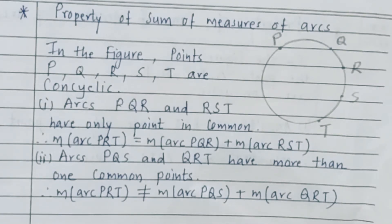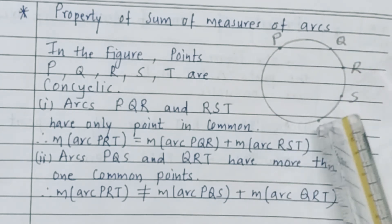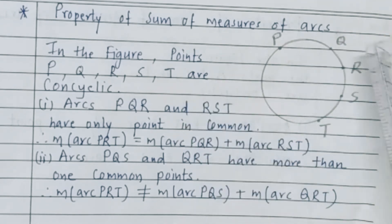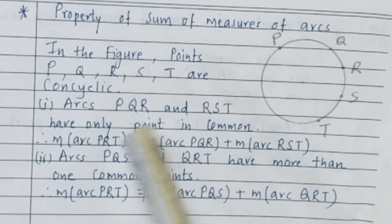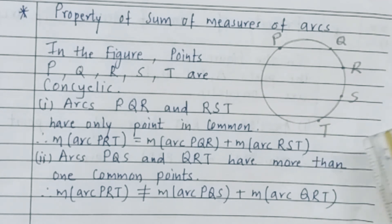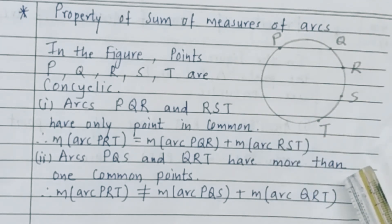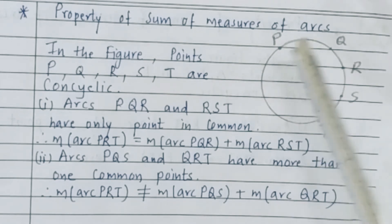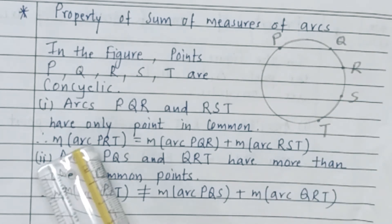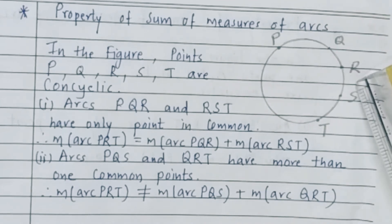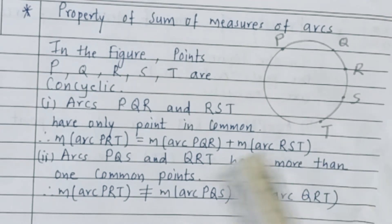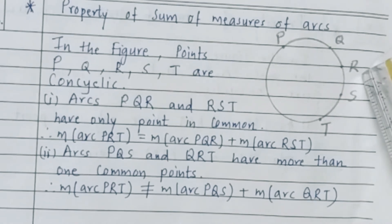Let us learn the property of sum of the measure of an arc. In the given figure, points P, Q, R, S, T are concyclic. When four or more points lie on the circle, they are called concyclic points. Arc PQR and arc RST have only one common point, that is point R.